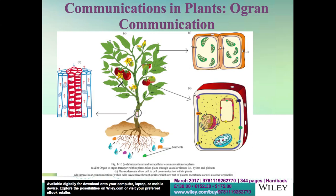Leaves are the main photosynthetic organs of plants. They are responsible for the transport of carbohydrates to all parts of the plant body, which are used for energy formation. Similarly, water and nutrients absorbed by plant roots also need to be transported to the aerial parts. So water, nutrients, and carbohydrates are the demand of each and every cell of the plant body.